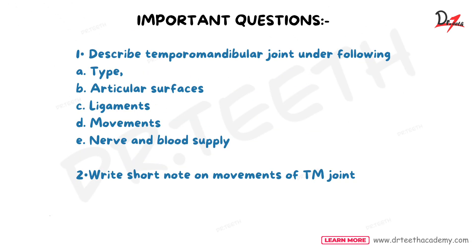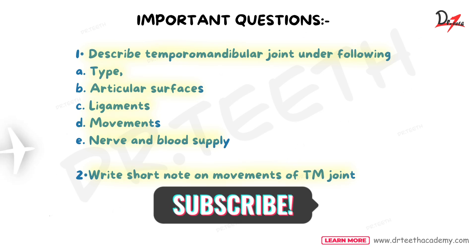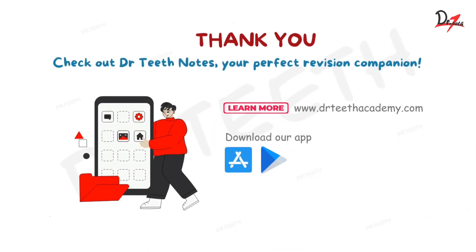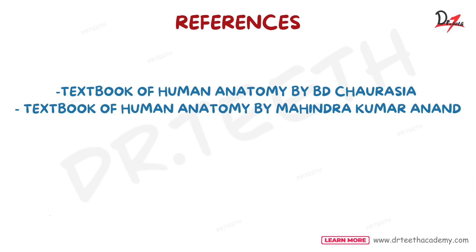Important exam questions include: describe the TMJ under the following — type, articulating surfaces, ligaments, movements, nerve supply, and blood supply — and write a short note on the movements of the TMJ. I hope you found this video helpful. Please revise it again as it is very important and can be asked in viva, as a short note, and as a long note. See you in the next video, take care.